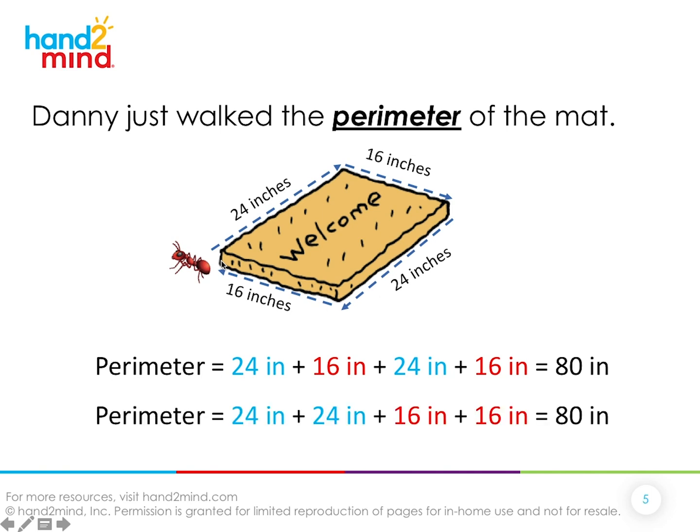We also used the commutative property to rearrange our numbers. Instead of doing 24 plus 16 plus 24 plus 16, we found you can get the same value if you do 24 plus 24 and then 16 plus 16. Same thing, it just looks different and is easier to work with.